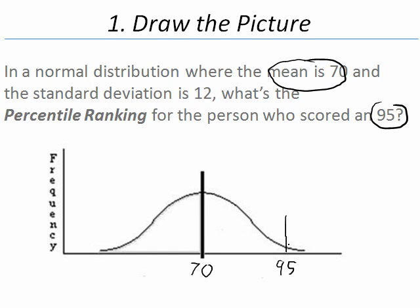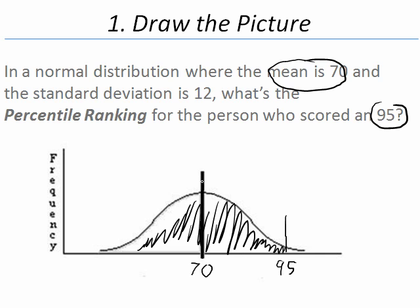Notice that I am drawing a picture. We know that percentile ranking is the percentage of people who scored below a particular value. Someone who has a 95 has a very high percentile. Also notice that when we drew this picture, we have two lines going to the distribution, one at the mean and one at our value. That divides our distribution into three parts.